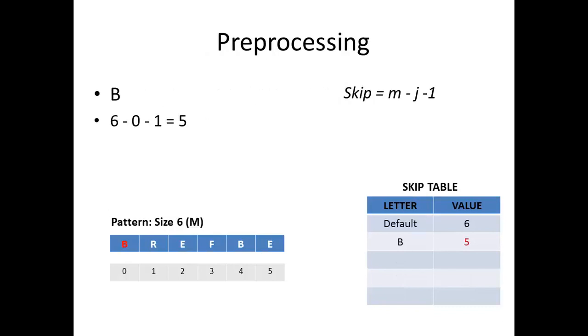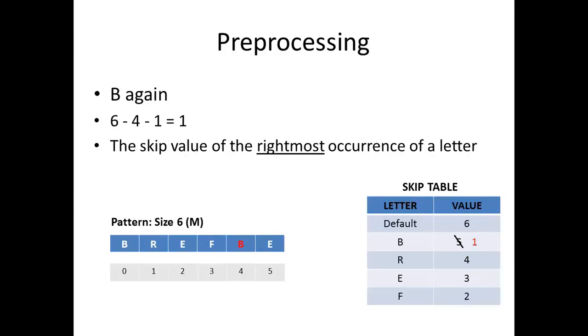Here is preprocessing at work. So for B, we have M which is 6, its index is 0, so minus 0, minus 1. We write 5 in the skip table that you can see at the bottom right. Do the same for R, this gives 4, same for E, this is 3, same for F, this gives 2. And then we encounter a B again. We simply calculate the number again and overwrite our old number. This essentially means that the skip value we have in our table is the skip value of the rightmost occurrence of a letter.